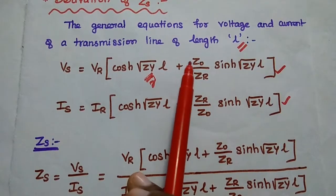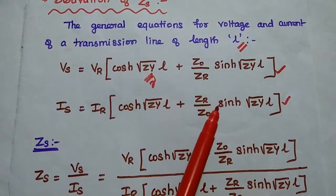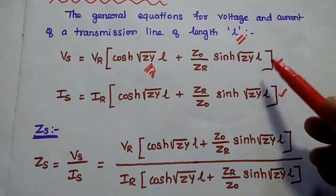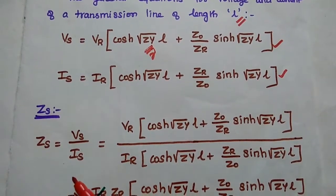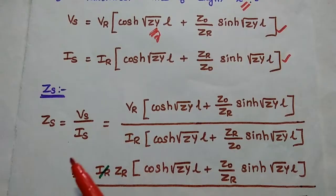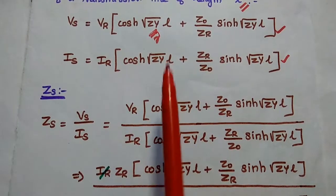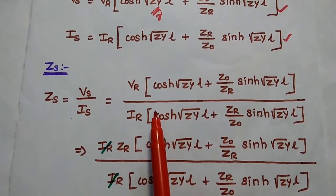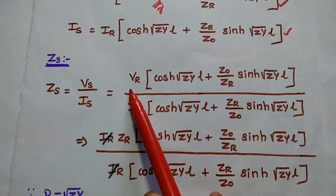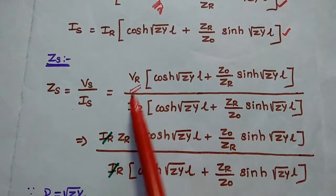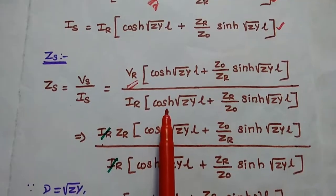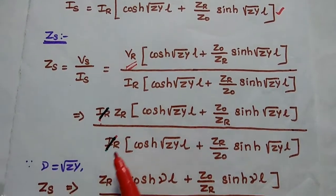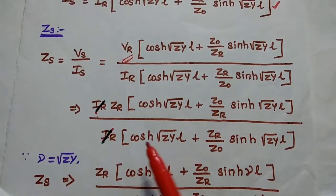The input impedance is equal to Vs by Is. Substituting the Vs and Is values, we simplify further. We note that voltage equals I into Z, so Vr equals Ir into Zr. Substituting Vr here, we can then divide through by the Ir value for further simplification.